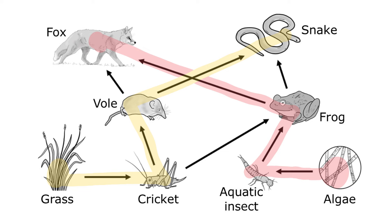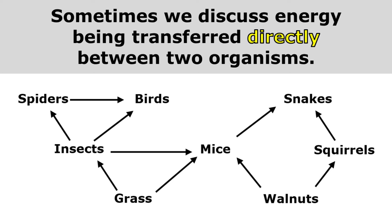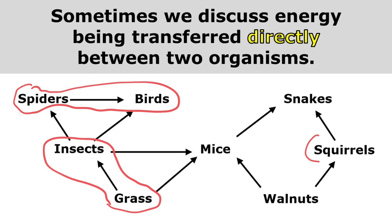Sometimes we discuss energy being transferred directly between two organisms. If energy is transferred directly between organisms, that means one of them is consuming the other, and there's always an arrow pointing directly from one to the other. So energy is being transferred directly from the grass to the insects, from the spiders to the birds, and from the squirrels to the snakes.